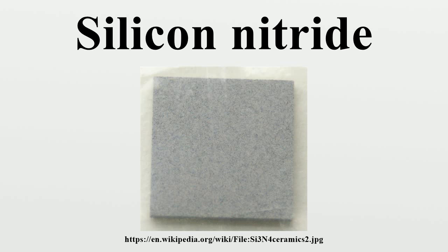The alpha and beta C3N4 have trigonal and hexagonal structures, respectively, which are built up by corner-sharing SiN4 tetrahedra. They can be regarded as consisting of layers of silicon and nitrogen atoms in the sequence ABAB in beta C3N4, or ABCDABCD in alpha C3N4. The AB layer is the same in the alpha and beta phases, and the CD layer in the alpha phase is related to AB by an AC glide plane. The C3N4 tetrahedra in beta C3N4 are interconnected such that tunnels are formed running parallel with the C axis of the unit cell.